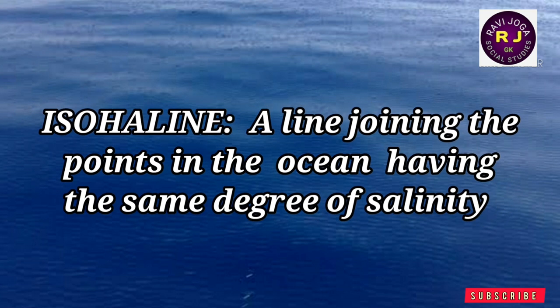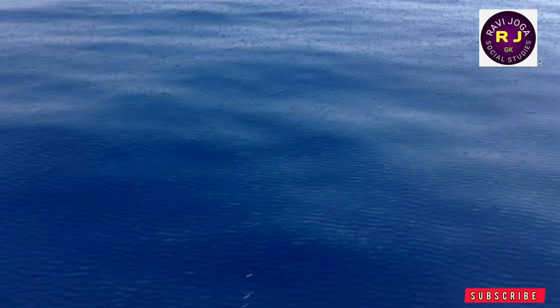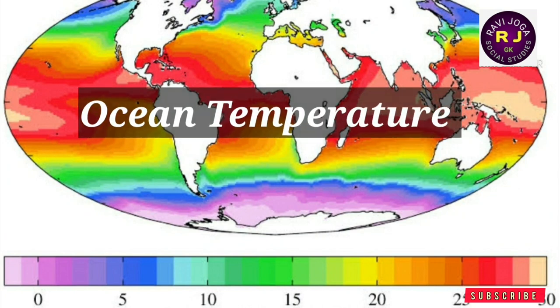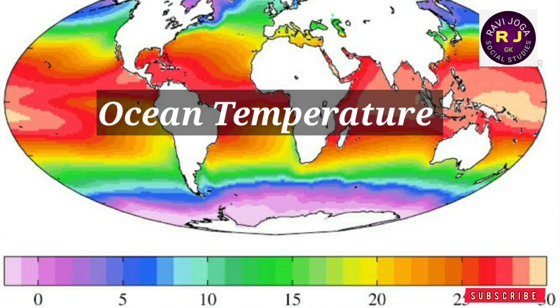An iso-heline is a line which joins the points in the ocean that have the same degree of salinity. Regarding ocean temperature, there is a little variation between the land temperature and the ocean temperature.